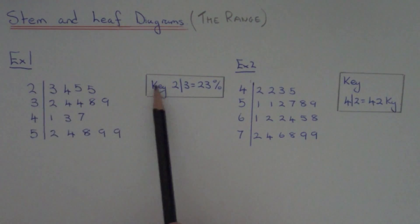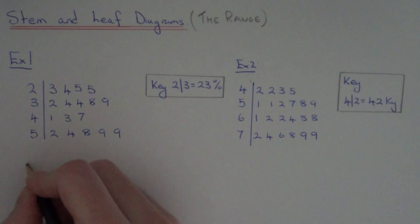So you can see 2 line 3 equals 23 percent. Right, so to work out the range then we need to get our biggest number.